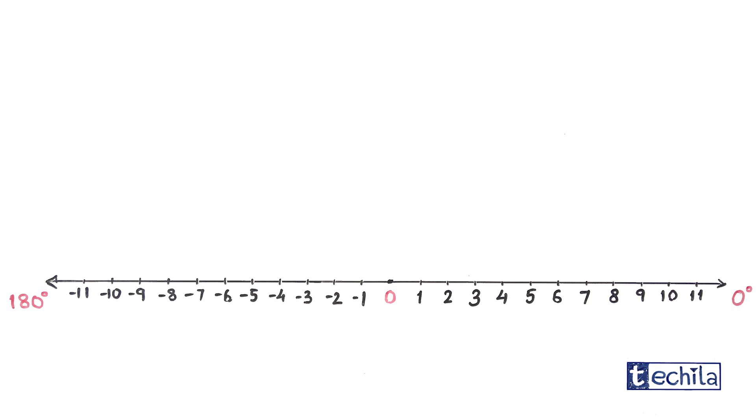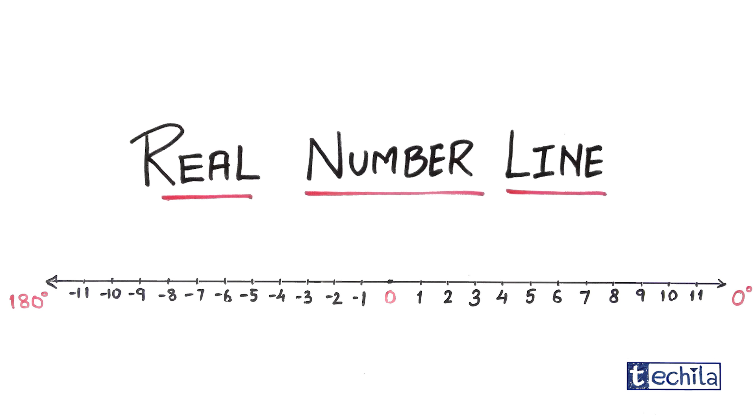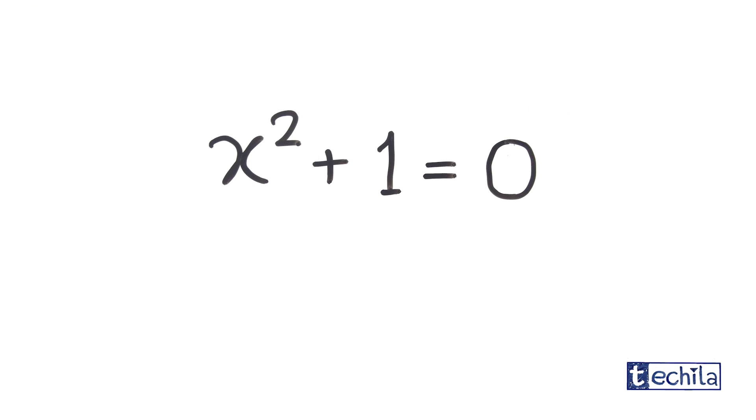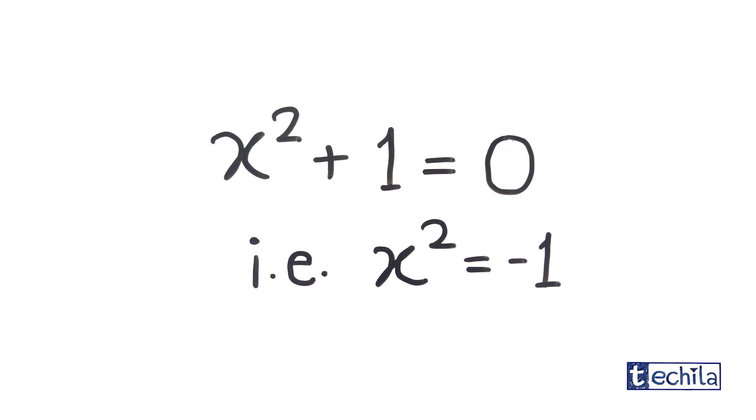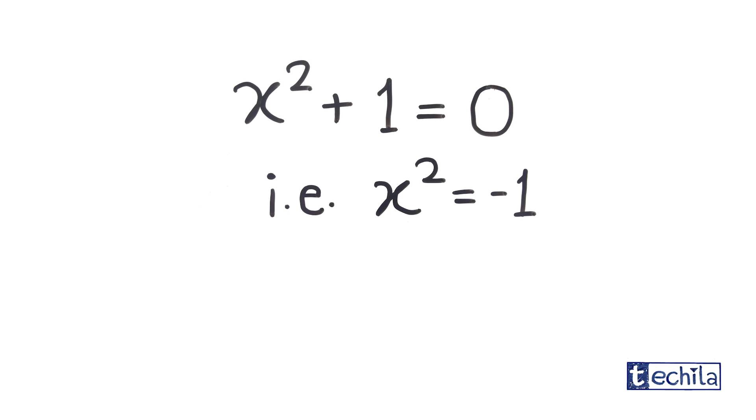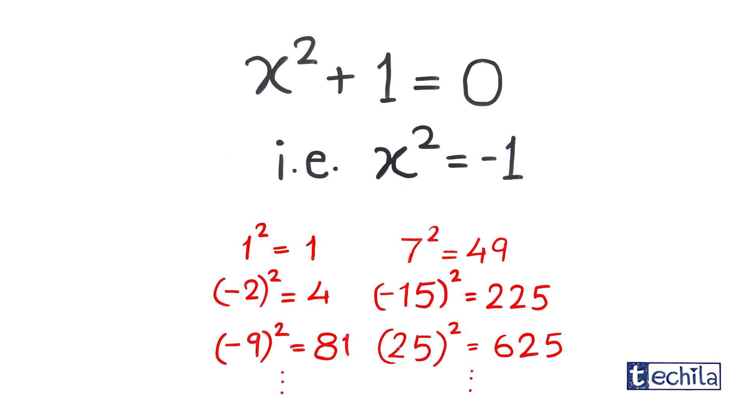And the line representing these numbers is known as real number line. Yet, there were equations that had no solutions even on this number line. Like this equation, x squared plus 1 equals 0 or x squared equals minus 1. We know that this equation has no solution on the real number line because we know square of any real number is always positive.